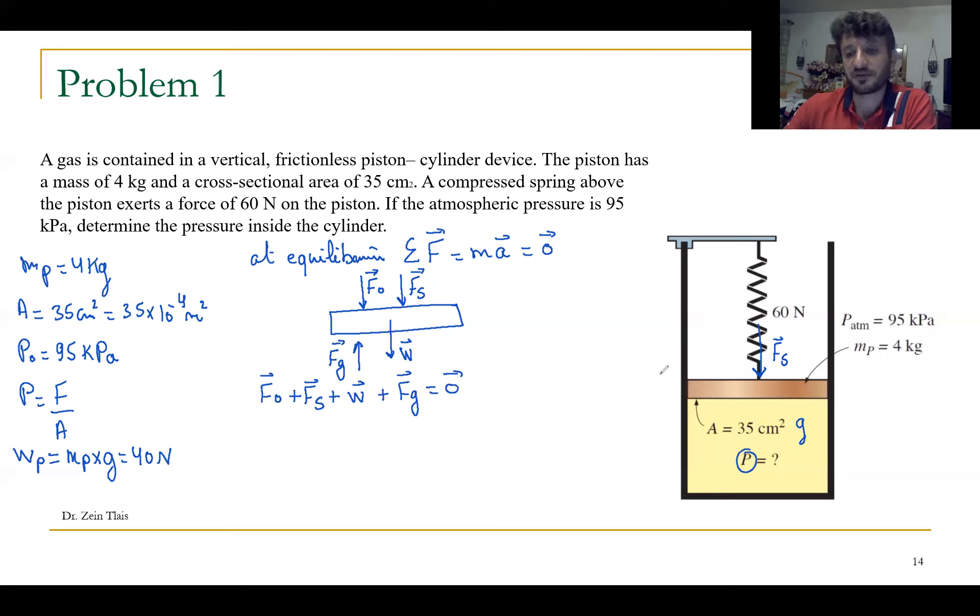We can take the positive direction upward. So we have Fg is positive minus F0 minus Fs minus the weight equals to zero. So we can say Fg equals to F0 plus Fs and the weight.